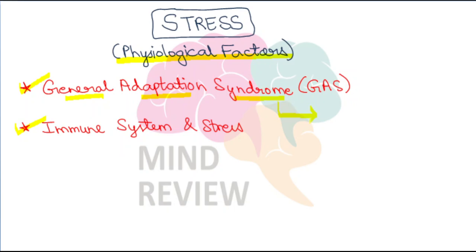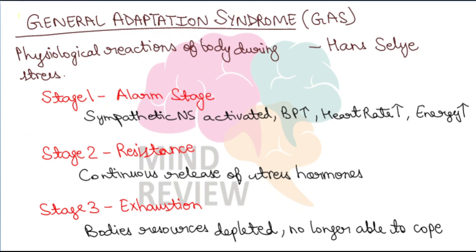Yeh model explain karne ki koshish karta hai ki koi bhi jo event aata hai aapki life mein jo stressful hai, so how do we actually respond to that stress. And then we will be talking about the impact of stress on our immune system. GAS model is really very very important, so please make sure that you understand this. Aapki twelfth class ki jo NCERT ki book hai usme bhi yeh model given hai.